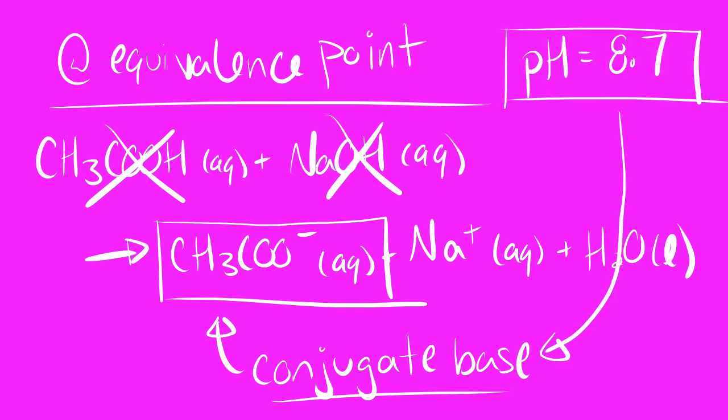The conjugate base that is present in solution will lead to a pH that is not a neutral 7 in solution, but rather an 8.7. We will be working with a slightly basic pH when we are at the equivalence point.